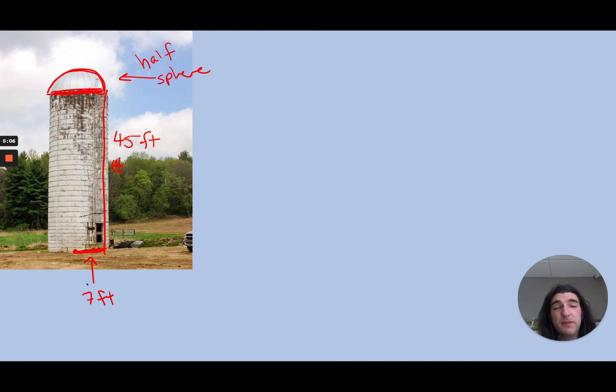And the thing on the top is just half of a sphere, which we call a hemisphere. So if I want the total volume, I just want to think of a couple pieces here. This main kind of column, the main sort of shaft of the silo, looks to be a cylinder, and then the top is a hemisphere, half of a sphere.